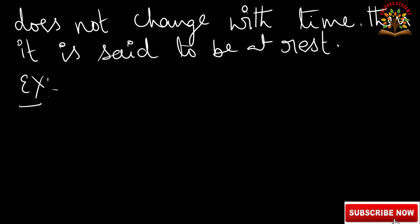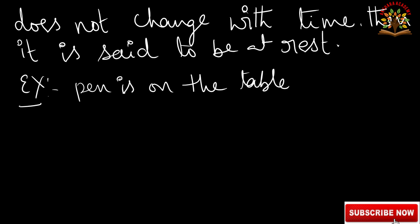Examples: the blackboard is at rest. Toys are at rest when they are not moving. A pen on the table is at rest. An electric pole is also at rest, and all buildings are at rest.